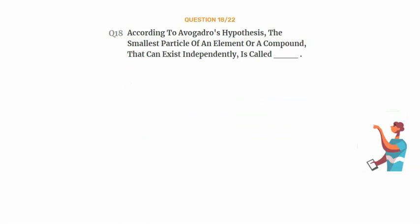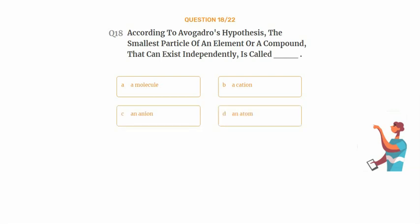Question number 18. According to Avogadro's hypothesis, the smallest particle of an element or a compound that can exist independently is called. Option A: A molecule. Option B: A cation. Option C: An anion. Option D: An atom.